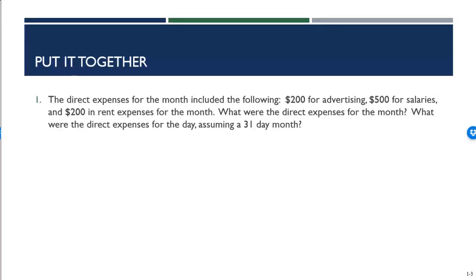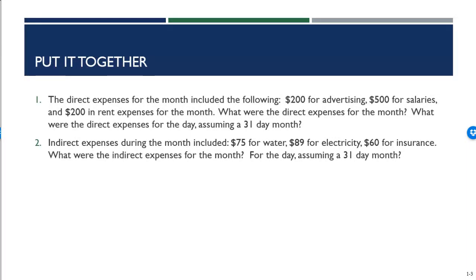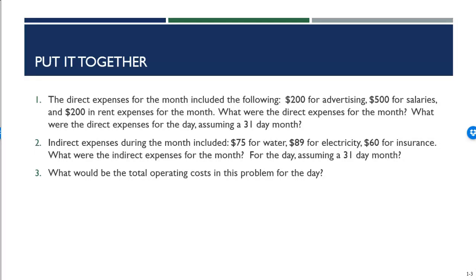After we have our gross margin, the next step walking through our income statement is to calculate expenses. It gives you the expenses for the month and asks for the expenses for the day assuming a 31-day month. We also look at indirect expenses — more our fixed and variable expenses — but both would fall in the SG&A category on the income statement as regular operating expenses. It then asks for the total operating cost for the day.